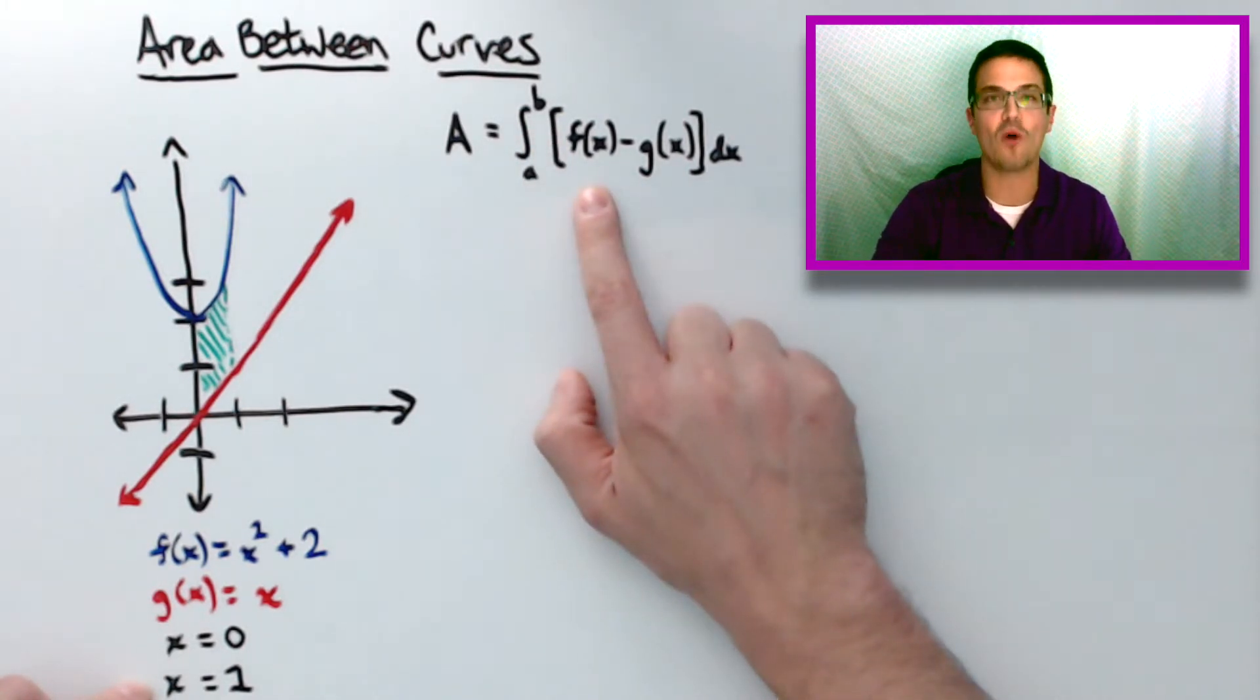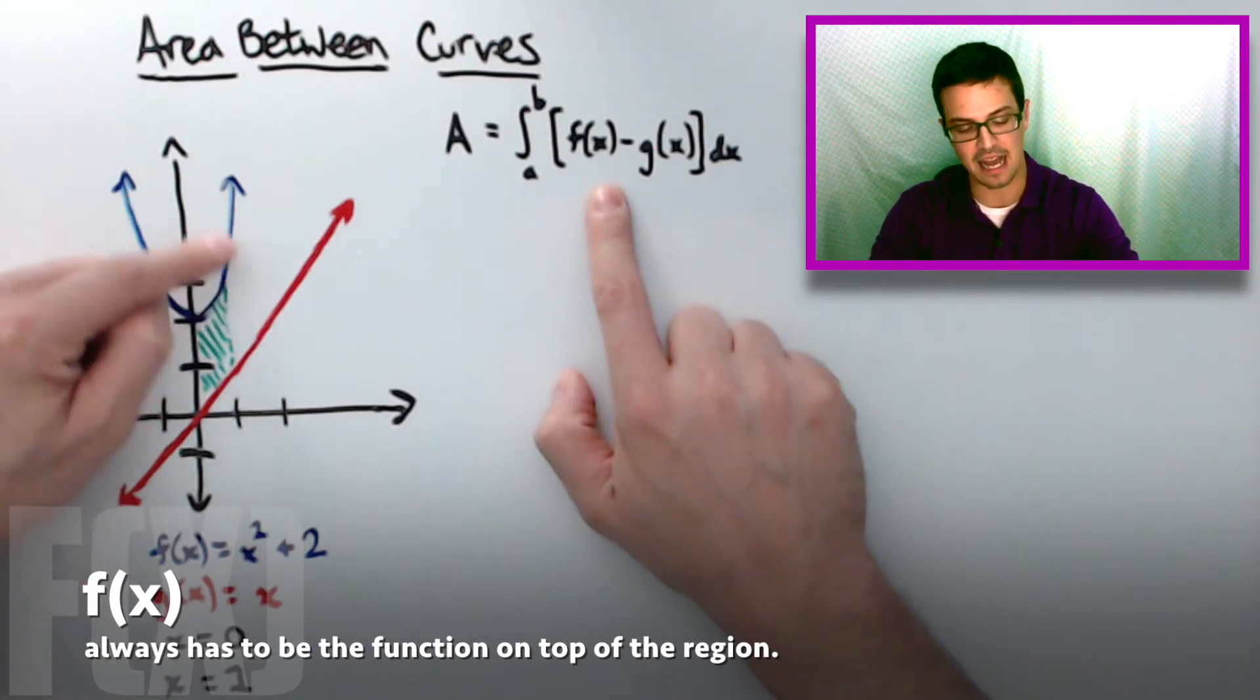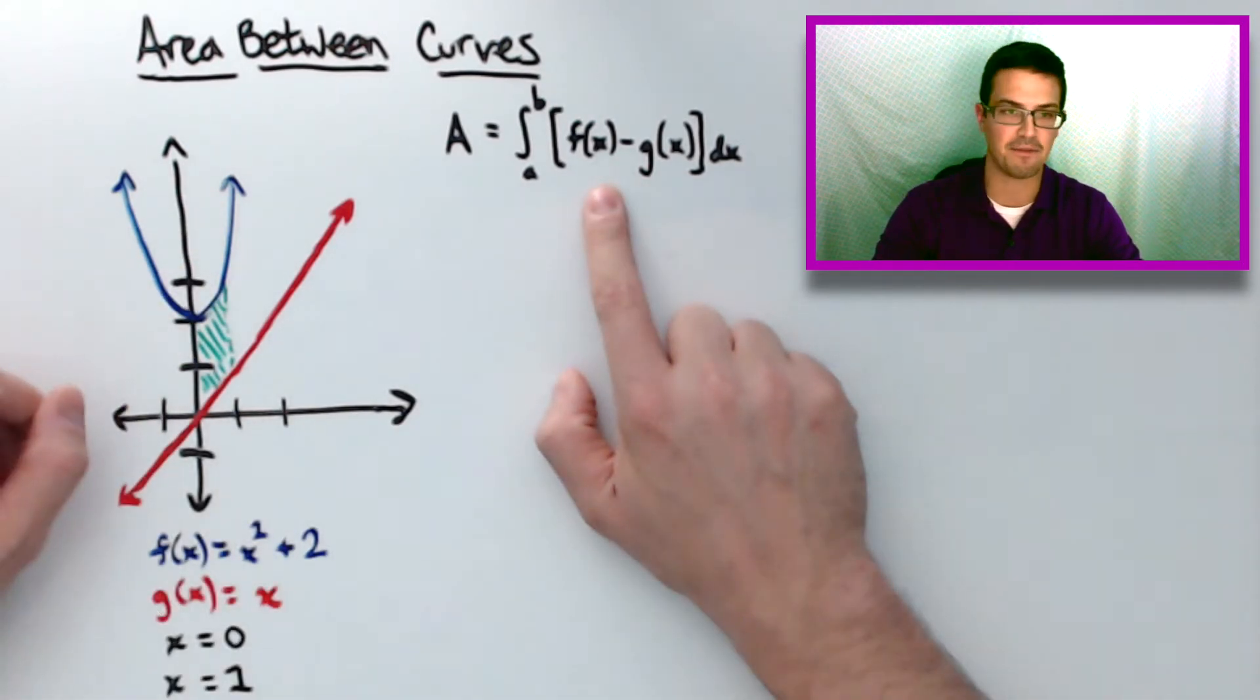and then f of x always has to be that function that's on the top of that interval. So in this case, the blue, which happens to be f of x, is on top of this green region right here. So you're going to want to use that function at the top up here for this f of x.